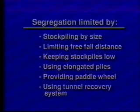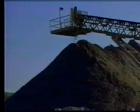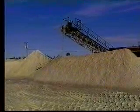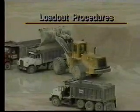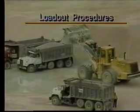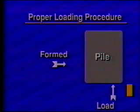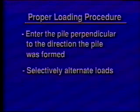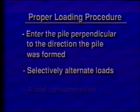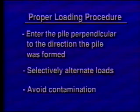When using tunnel recovery systems, after initial drawdown a live zone is formed which confines the material. Stockpiling rules are less critical for fine materials such as sand and screenings, which do not have a great tendency to segregate. During loadout, an observant and trained front-end loader operator can aid in producing specification aggregate from a segregated stockpile. As shown in this scene, the operator will enter the pile perpendicular to the direction that the material is deposited, allowing a cross-section of the pile to be accessed. During loading, the operator will selectively alternate loads from the loading face to re-blend visually segregated material, and will avoid contamination or return it to be recycled.